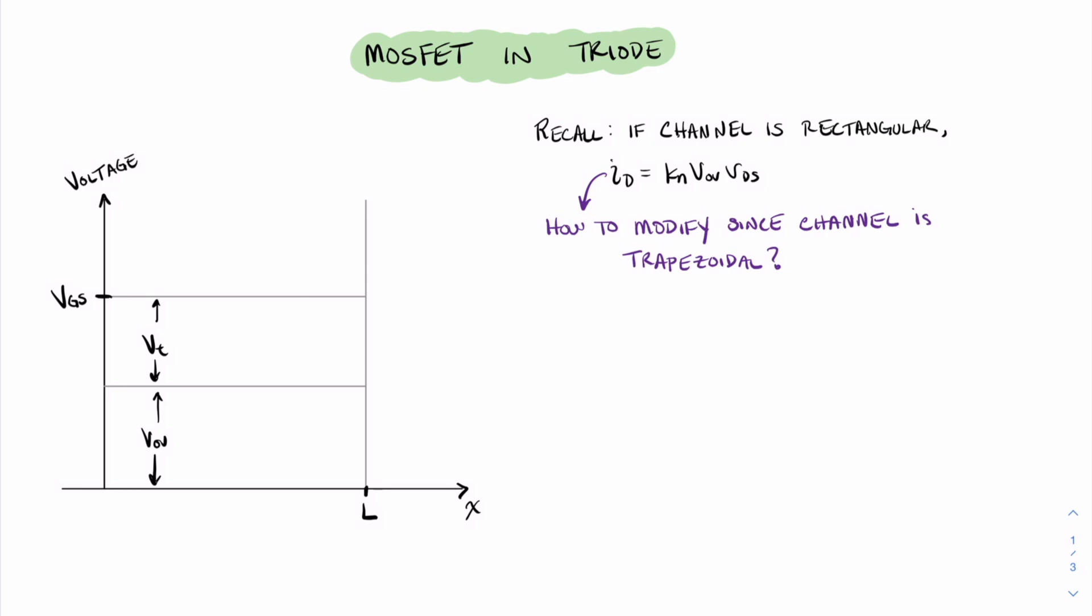The question at hand now is how to modify the value of ID given the fact that the channel shape is trapezoidal. And in this, what we're actually going to do is we're going to focus on this value of VOV, and we're going to see how that part of the equation is modified. If you recall, the value of VOV is what gave rise to the channel in the first place. And now that we have a VDS, and now that we know that this VDS is significant, we must think about how VDS modifies the channel shape. But of course, that means we're going to make a modification to VOV.